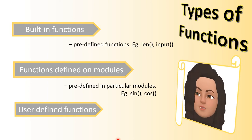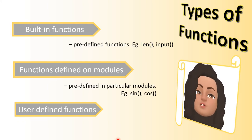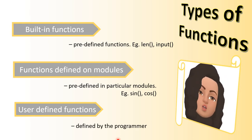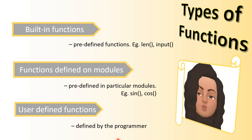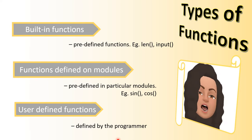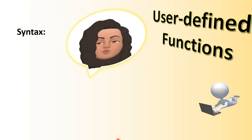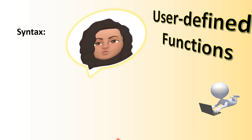The next type is user-defined functions. These functions are defined by the programmers or users depending upon the particular requirement. If a user wants to solve a particular task, the user can create their own function, and the function can be called anywhere in the program. Now let's see how to create a user-defined function.